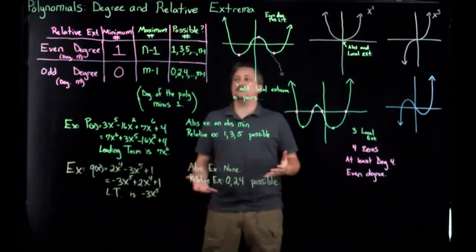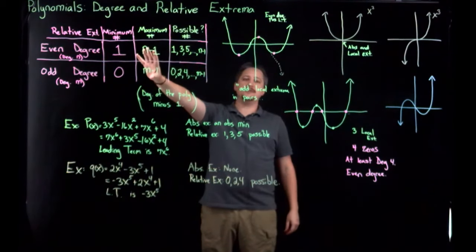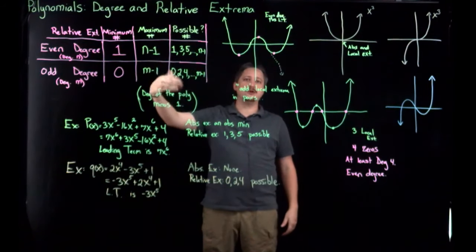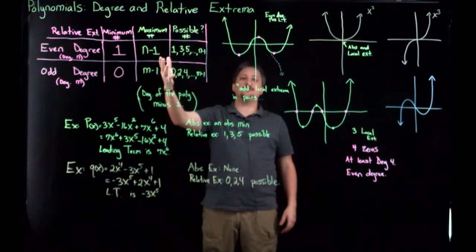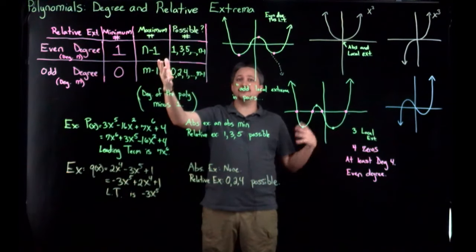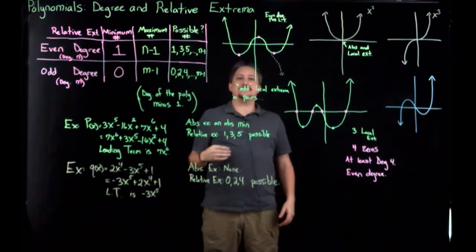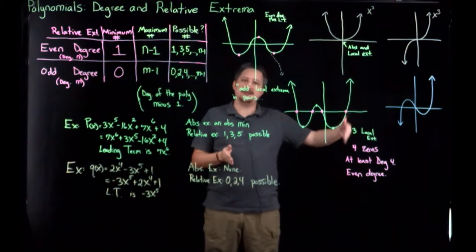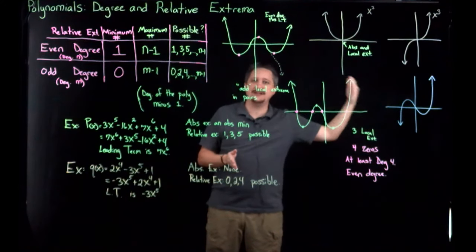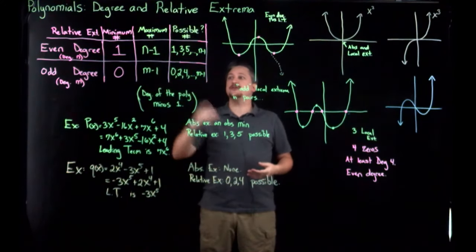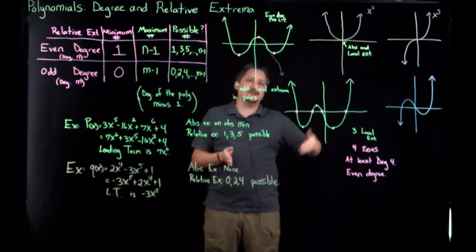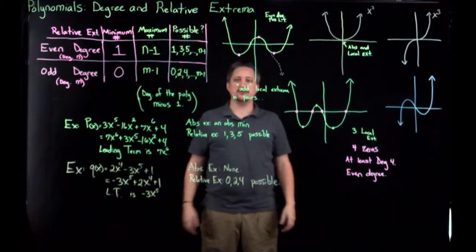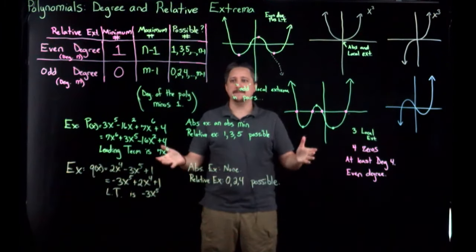So here's the two-second recap. For relative extrema: the minimum is based on the absolute extrema — for even degree, at least 1; for odd degree, could be 0. The maximum, no matter what, is the degree minus 1. And the possible counts are obtained by adding 2 to the minimum until you reach the maximum. For even degree: 1, 3, 5, 7, 9, ... up to degree minus 1. For odd degree: 0, 2, 4, 6, 8, ... up to degree minus 1. And that's that.